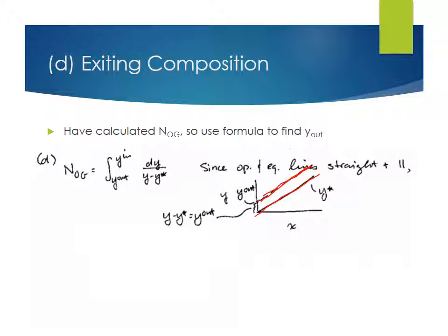And the distance between the two can be found by taking the difference at X equals zero. So there, the value of Y should be Y out, and the value of Y star should be zero, because when we have X equals zero, Y is zero at equilibrium with that. So Y minus Y star is always equal to Y out. So the denominator of this integral, Y minus Y star, is equal to Y out. So we can just plug that into the integral and evaluate it in a very straightforward way. The value of the integral is just one over Y out times Y. And then we put in the limits of integration, Y in and Y out. And so we get this expression that the number of transfer units is Y in over Y out minus one.